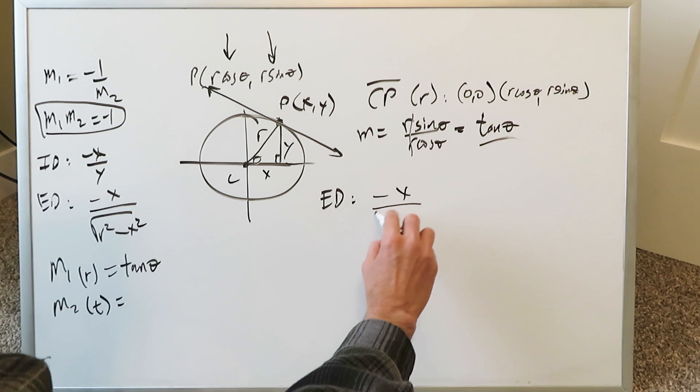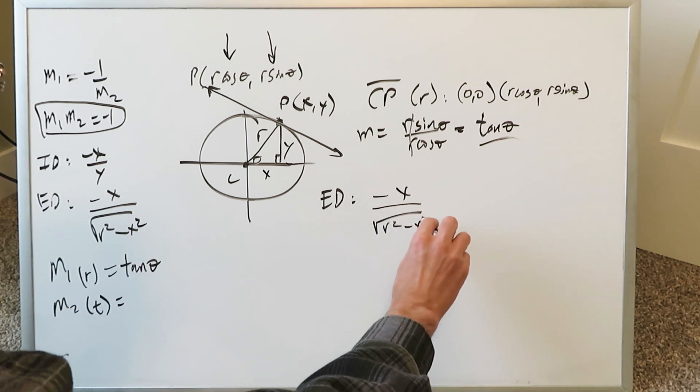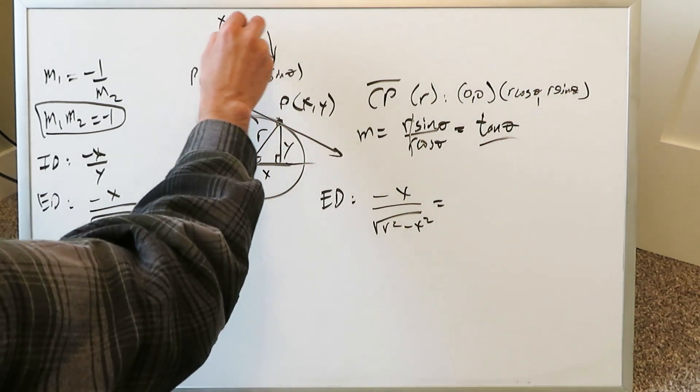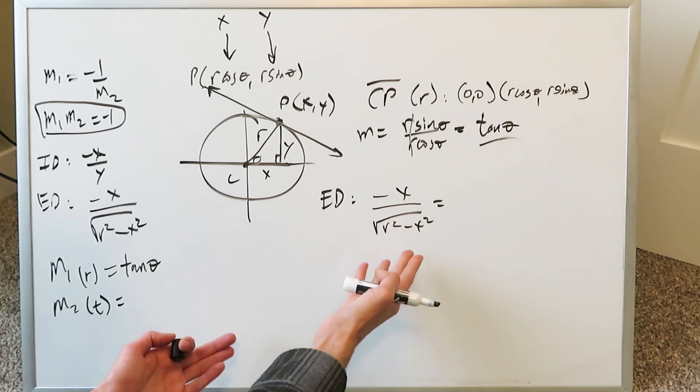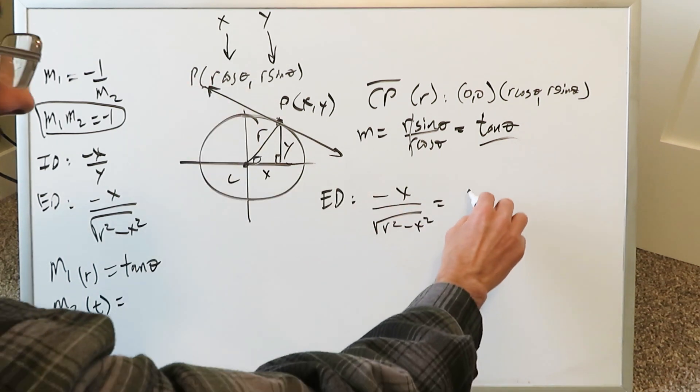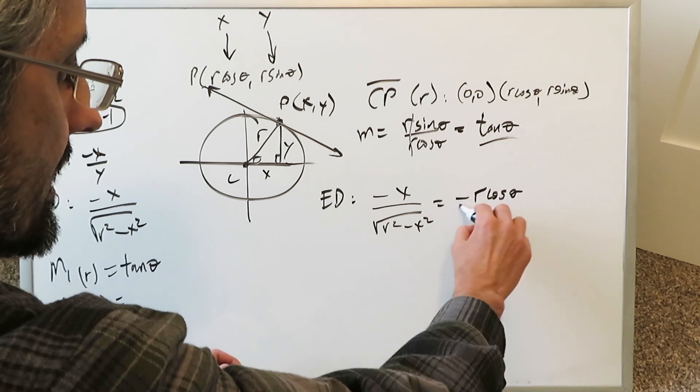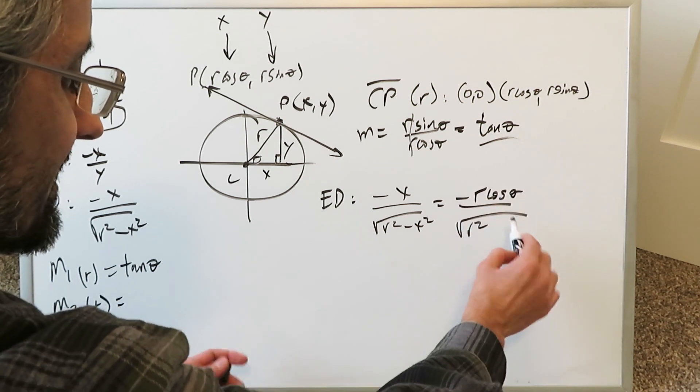We have minus x divided by square root of r square minus x square. You just have to plug in the x or the y value relevant to that specific point p, and the values are right here, x and the y. Here, you're only seeing x variable. You only use the x values. You'll have minus x, which is r cosine theta. And here, you'll have, coming into that depiction, r square minus r square cosine square theta.